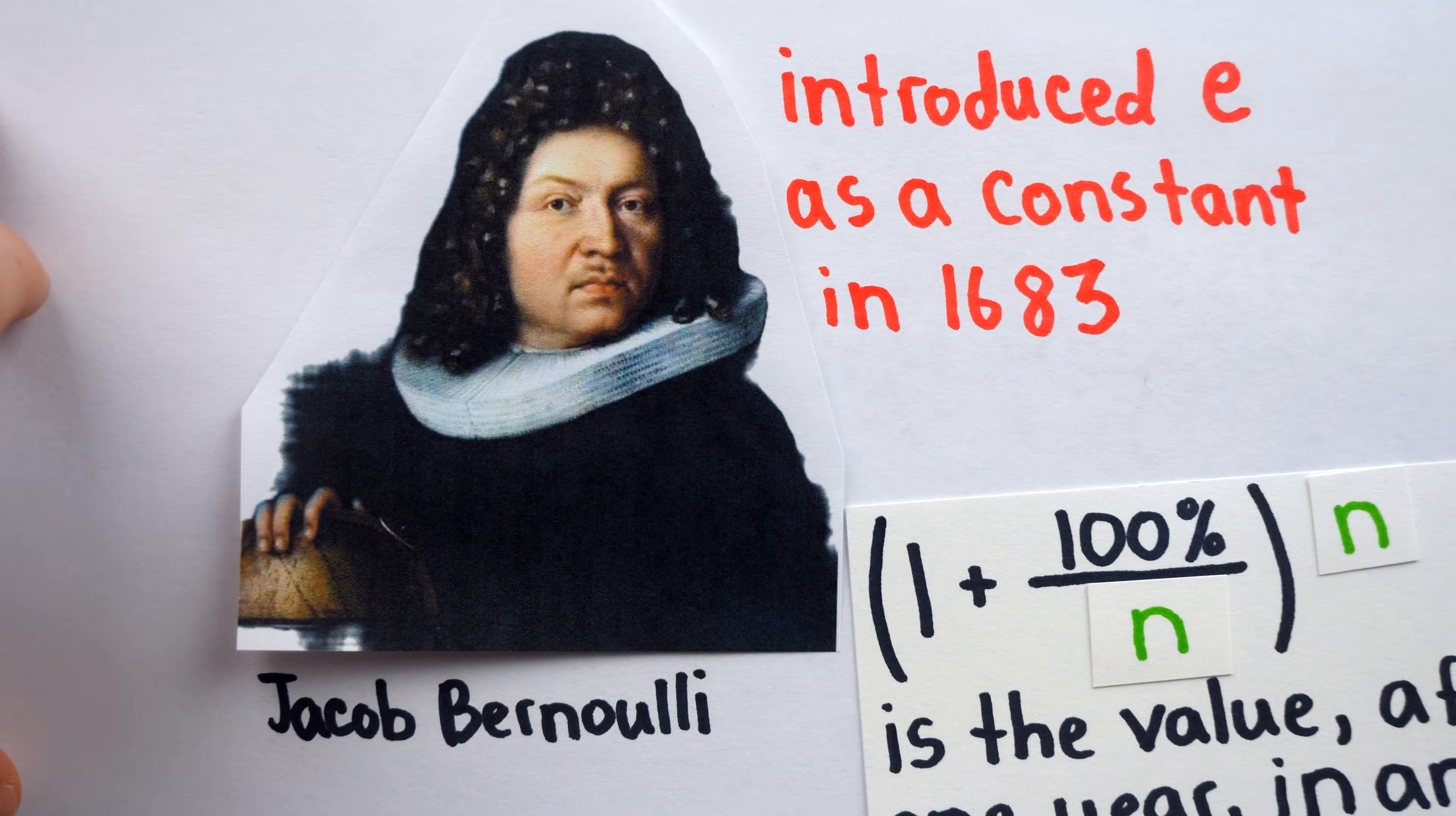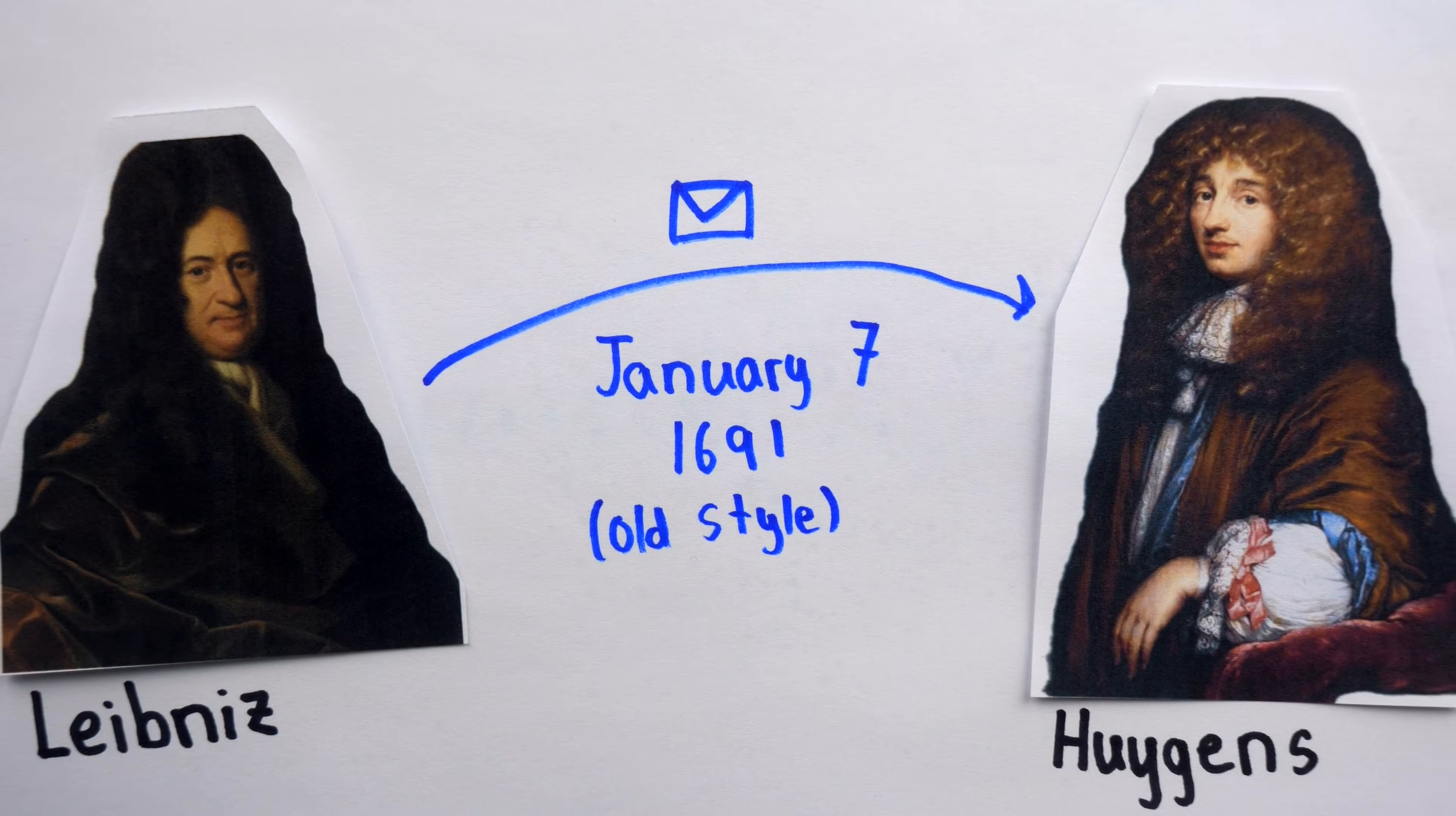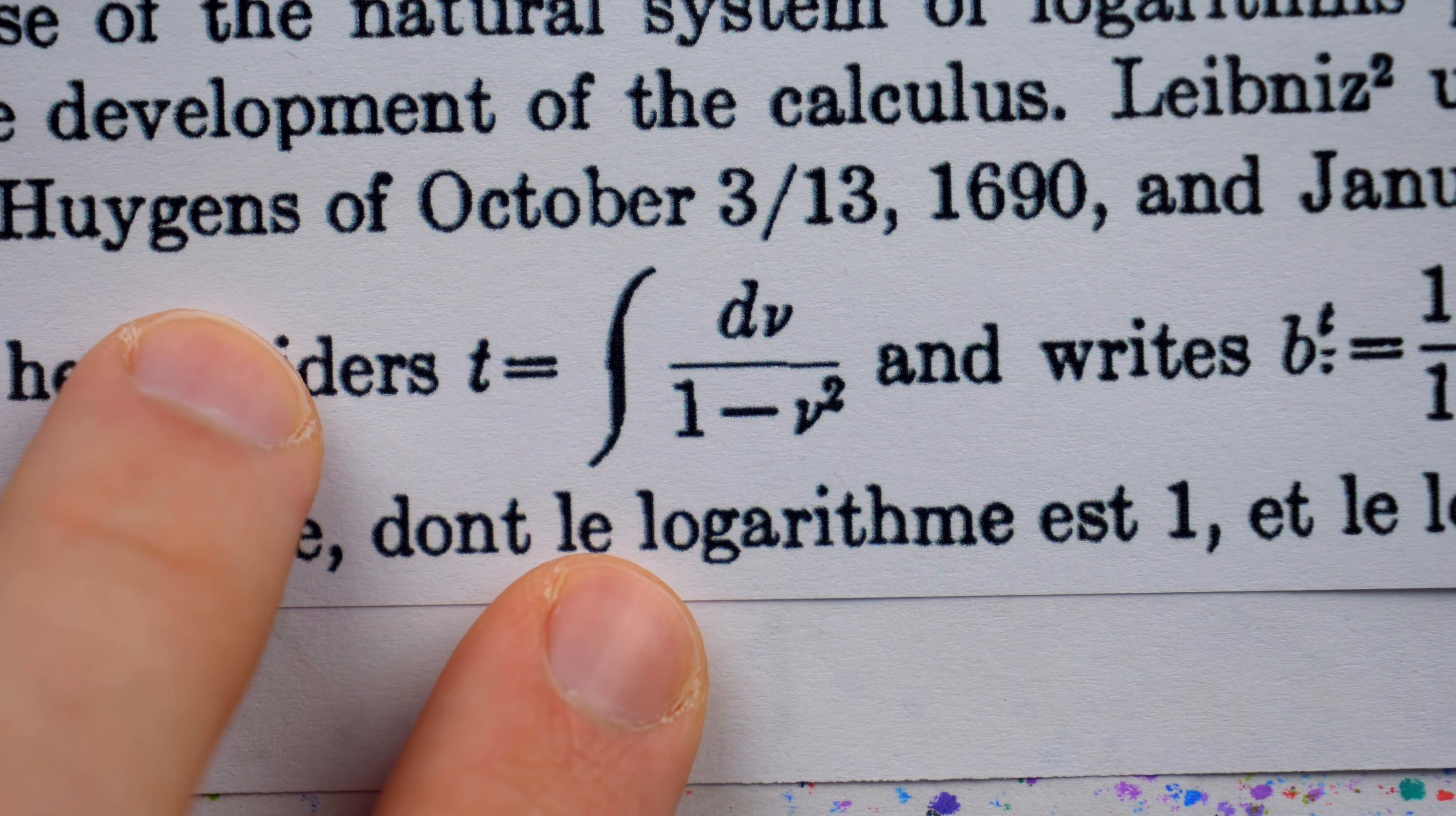The earliest use of a single symbol for this number, however, wasn't in 1683 with Jacob Bernoulli's study of interest, but in fact in a letter from Leibniz to Christian Huygens sent on January 7th, 1691. In it, Leibniz sets t equal to the integral, or area underneath, 1 over 1 minus v squared. And at this time, modern exponent notation was coming into use.